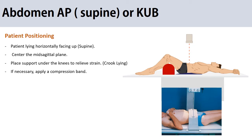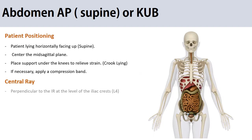The central ray should be perpendicular to the image receptor at the level of L4 or the iliac crest, which is mostly easy to find. Some technologists may use the umbilicus as a landmark when they cannot find the iliac crest, especially in obese patients. However, this landmark is not very accurate and is not recommended.